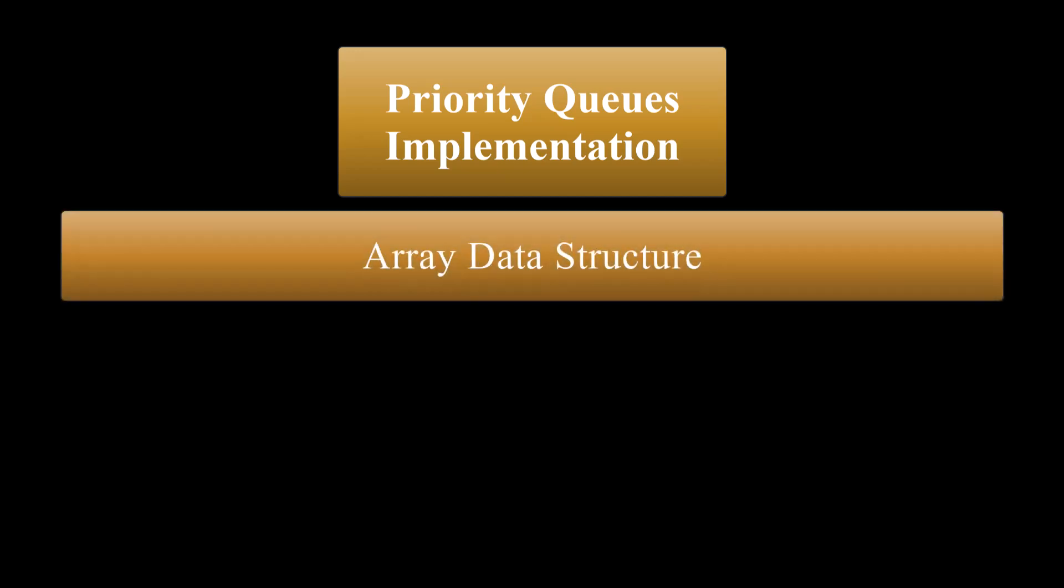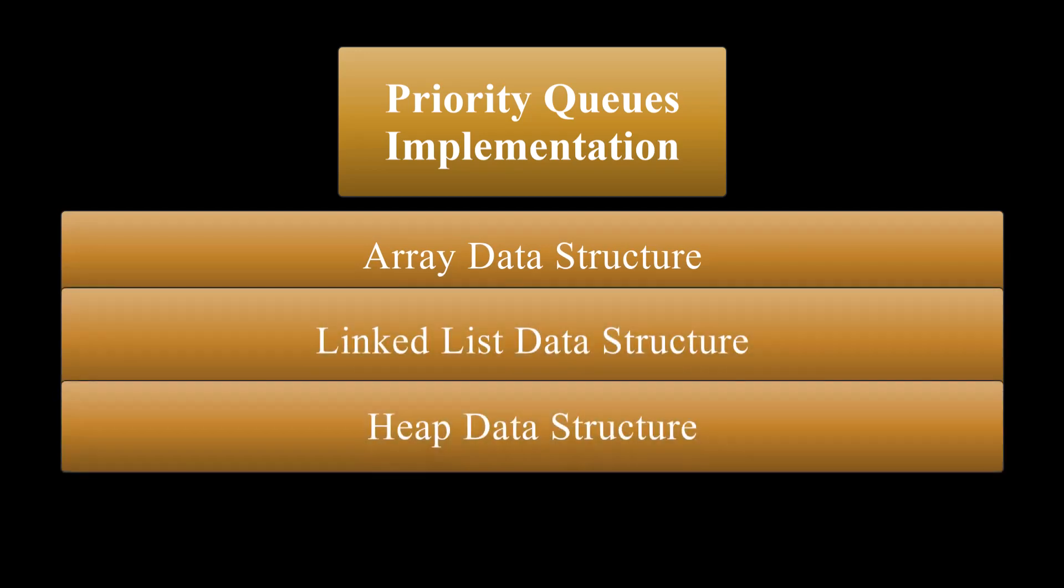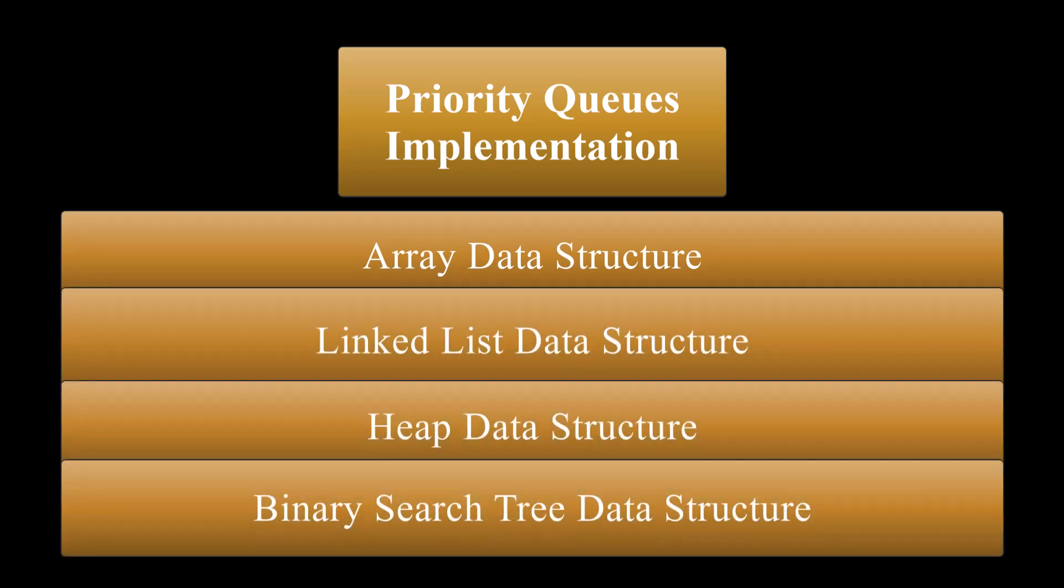Now let's talk about the implementation of priority queues. Priority queues can be implemented using the following data structures: array data structure, linked list data structure, heap data structure, and binary search tree data structure. Now that we understand what priority queues are, let's take a look at heap.